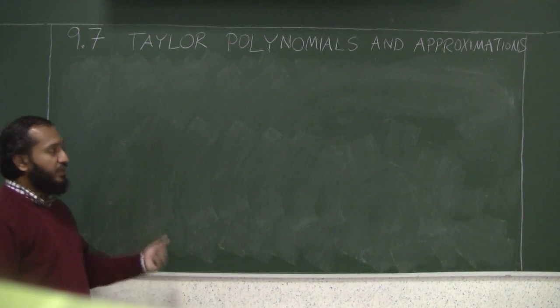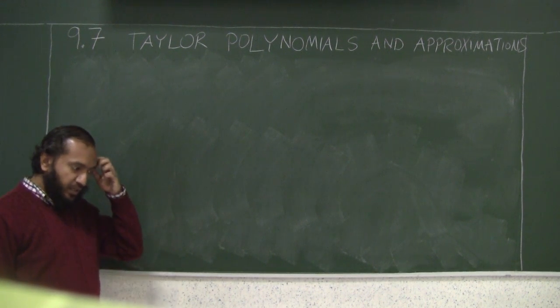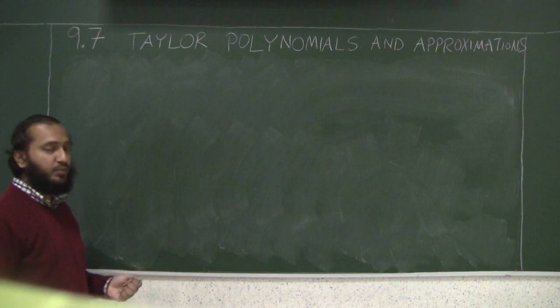So now that you have learned what is a Taylor polynomial of degree n and a Maclaurin polynomial of degree n, let's do a few examples.